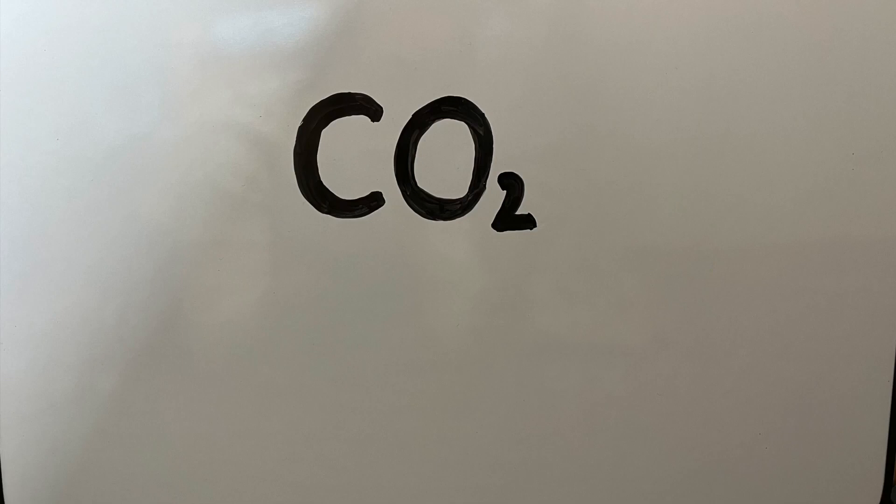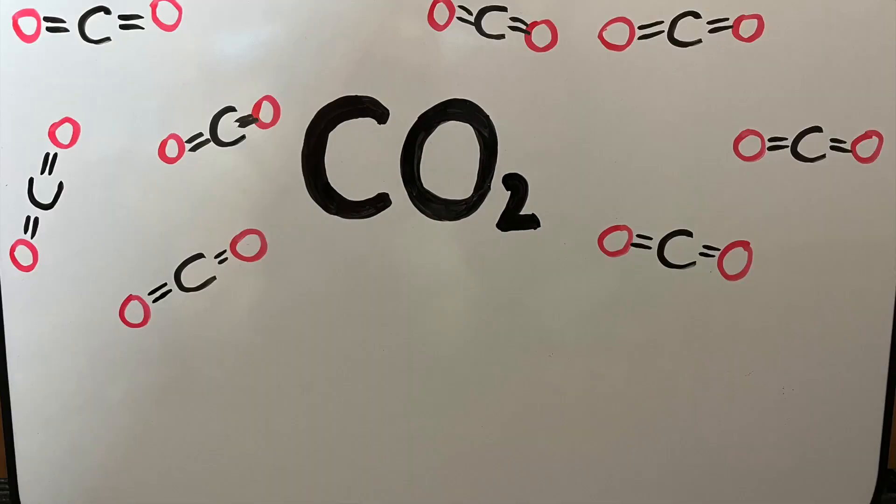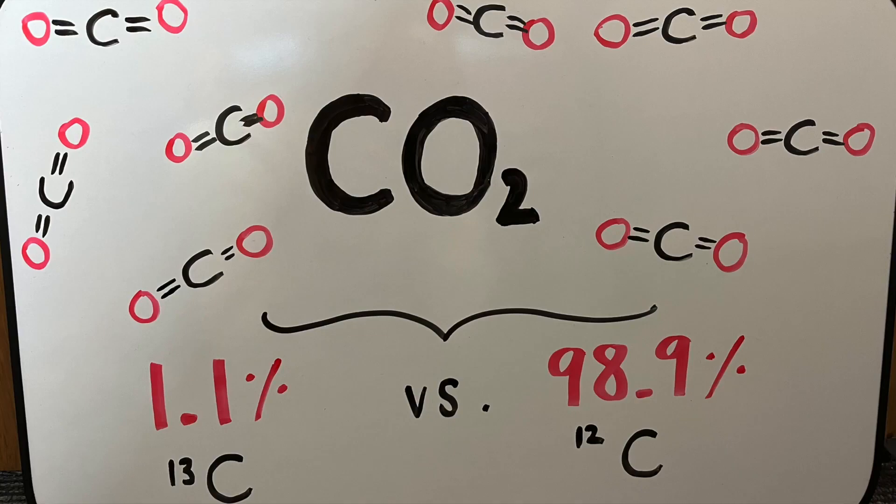In the atmosphere, we find carbon in the form of carbon dioxide, and the composition of atmospheric carbon dioxide is dominated by carbon-12. It's made up of 98.9 percent of the lighter isotope carbon-12, and just 1.1 percent of the heavier carbon-13.